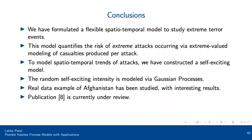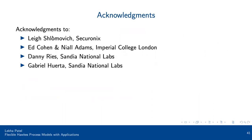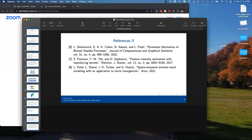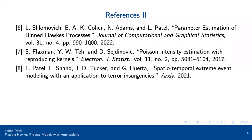In conclusion for this part, we formulated a flexible spatial-temporal model to study terror events. The inclusion of marks — number of casualties and their probability density — helped quantify the risk of extreme attacks spatially and temporally. To make models as flexible as possible, we constructed a flexible self-excitation kernel using Gaussian processes as priors. Results for Afghanistan corroborated news articles and other studies in the region. Acknowledgments to Lee at Securonix, Ed and Niall at Imperial College London for the cybersecurity work; Danny Reese for the lightning data; and Gabe Werther for the terrorism work.